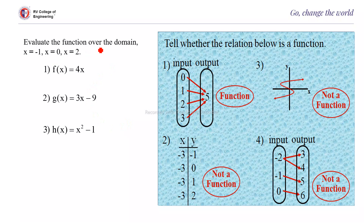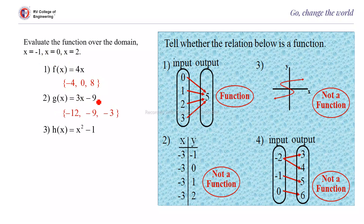Evaluate the following functions over the domain x = {-1, 0, 2}. For f(x) = 4x: f(-1) = -4, f(0) = 0, f(2) = 8. For g(x) = 3x - 9: substituting -1 gives -12, substituting 0 gives -9, and substituting 2 gives -3. For h(x) = x² - 1: h(-1) = 0, h(0) = -1, h(2) = 3.